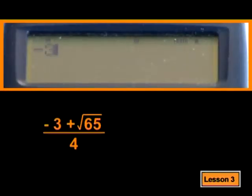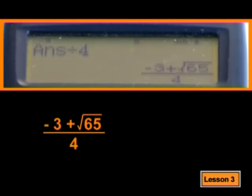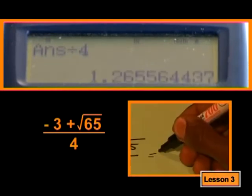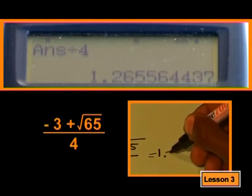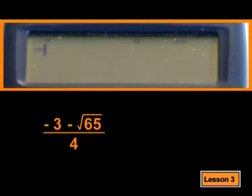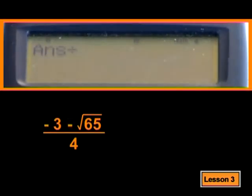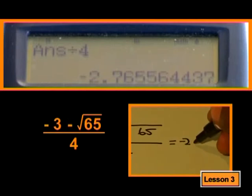So if I put that into my calculator, I get that x equals 1.27, or x equals negative 2.77.